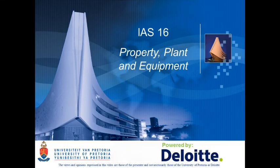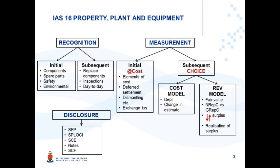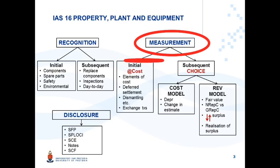IAS 16 Property, Plant and Equipment: Dismantling, Removing and Restoration Costs. This is a summary of the total content of IAS 16. The accounting treatment comprises recognition, measurement, and disclosure. This presentation focuses on measurement, and specifically initial measurement. The elements of cost have been discussed in a previous presentation.